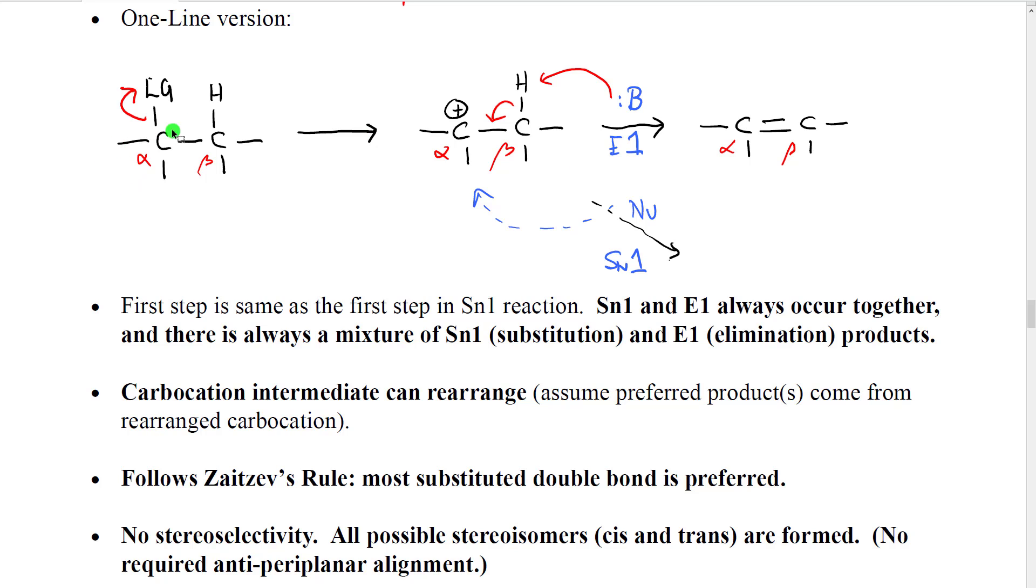This occurs basically because the substrate can do either reaction. When the leaving group leaves, it makes a carbocation, which we have no direct control over. It's just already in the reaction mixture. And so the carbocation has a choice of reactions to do. It could go down one fork here and make a double bond doing E1. Or it could go down another fork where nucleophile comes in and connects, makes an SN1 product.